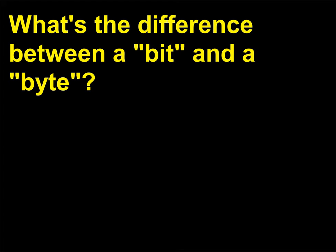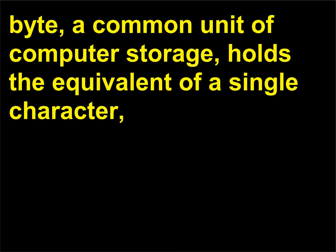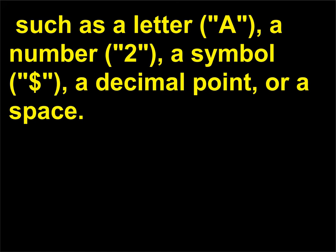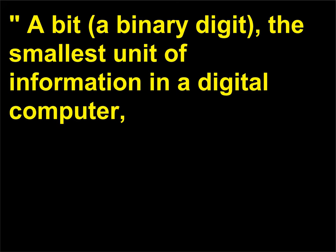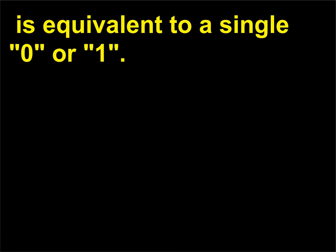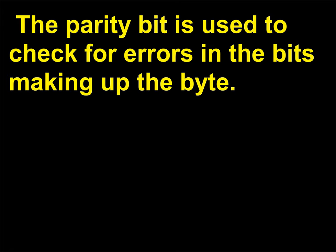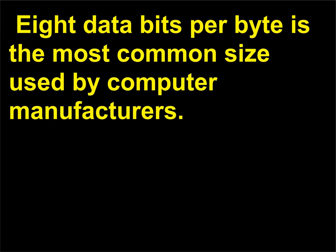What's the difference between a bit and a byte? A byte, a common unit of computer storage, holds the equivalent of a single character — such as a letter (A), a number (2), a symbol ($), a decimal point, or a space. It is usually equivalent to 8 data bits and 1 parity bit. A bit, a binary digit, is the smallest unit of information in a digital computer. The parity bit is used to check for errors in the bits making up the byte. 8 data bits per byte is the most common size used by computer manufacturers.